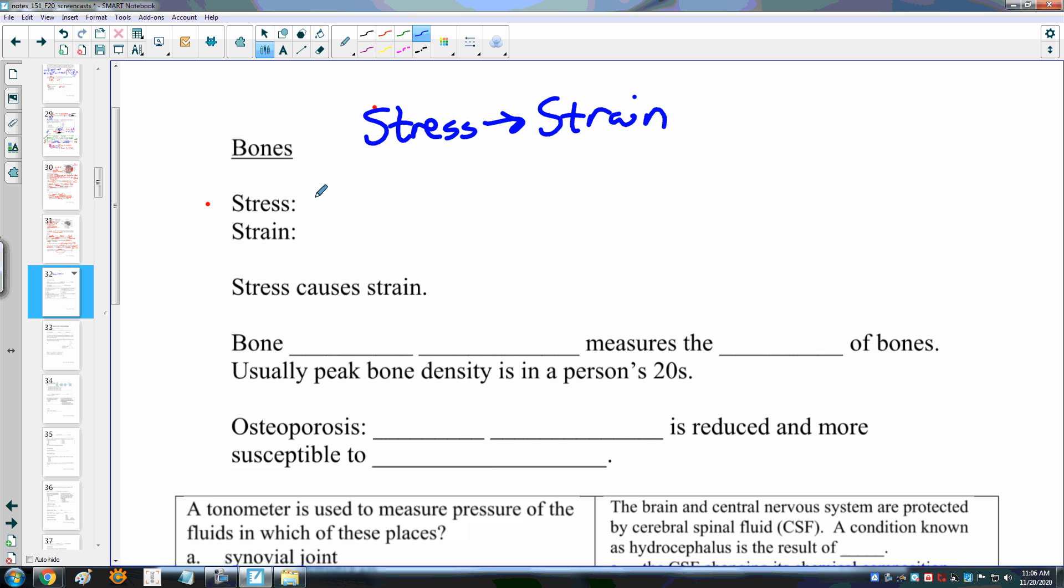Stress is a force per unit area. A force over an area. That is our stress, so F over A will cause a strain. And the strain is the deformation of the solid. How is it deformed?